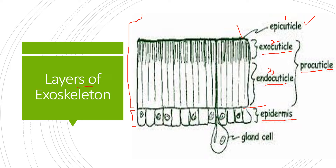A gland cell is also present in the exoskeleton of arthropods. This gland cell plays an important role in the process of molting. This gland cell is called the hypodermal gland — 'hypo' meaning beneath and 'dermal' meaning dermis. So this gland cell is present beneath the epidermis, or beneath the skin layer, and is therefore called the hypodermal gland.